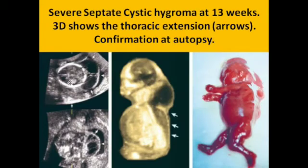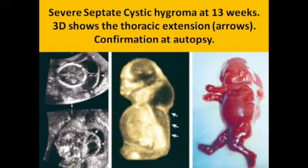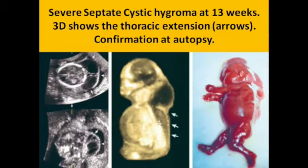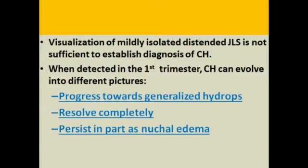In these images we can see that there are sacs separated from each other in the posterior aspect of the neck. Another image also shows these separations in fluid-filled sacs. This image shows the extension of the process to the posterior aspect of the thoracic cavity, confirmed by autopsy. Visualization of mildly isolated distended jugular lymphatic sacs alone is not sufficient to establish the diagnosis of cystic hygroma.